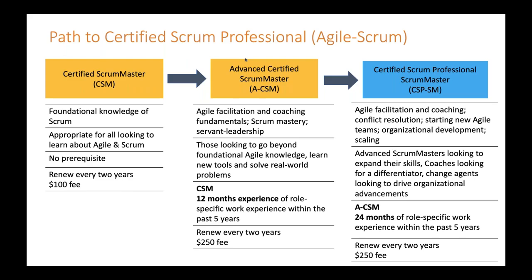Moving to the path to CSPSM — the Scrum Master path. The way Lifespeed offers all of these is as two-day classes. The Scrum Alliance requires an in-person class for the foundational CSM, but allows virtual training for the advanced programs like the ACSM and CSPSM. For the CSM, you take the two-day class and then take a timed one-hour multiple-choice online test. Once you pass that test you're a Certified Scrum Master. That is the only Scrum Alliance class that currently has a test.